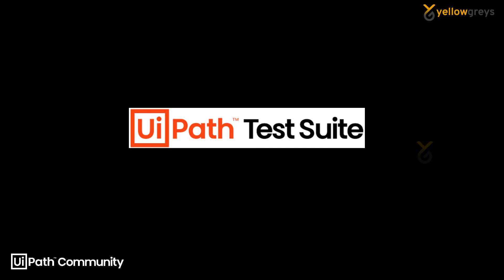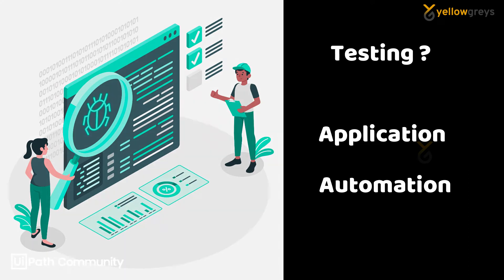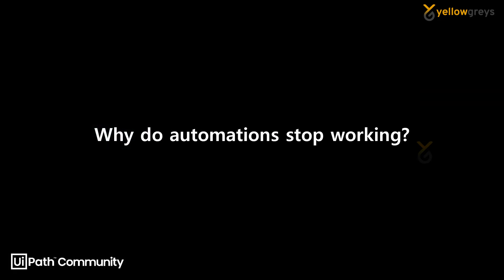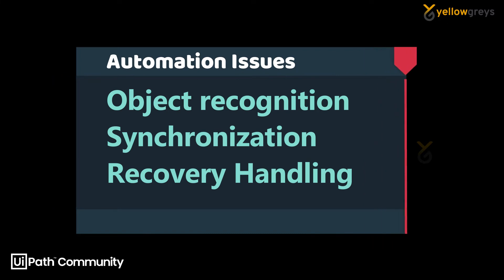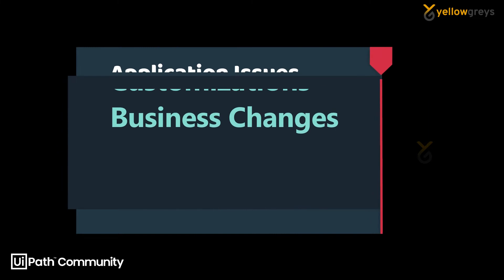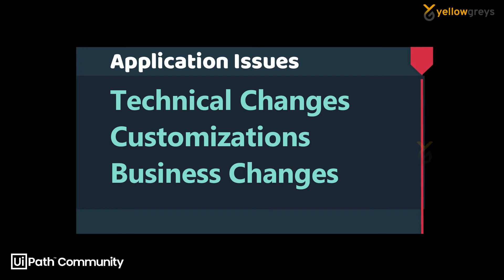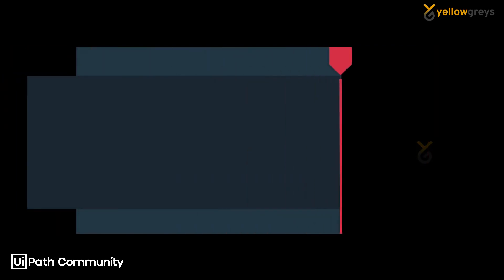We will face issues stopping our automations. Why do automations stop working? There is a possibility of automation issues like object recognition, synchronization, and recovery handling. On the other hand, there are application issues like technical changes, customization, and business changes.